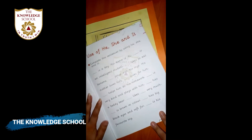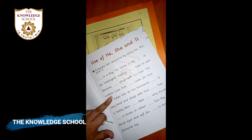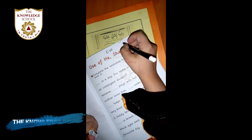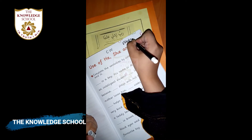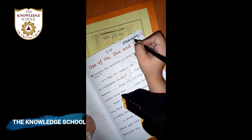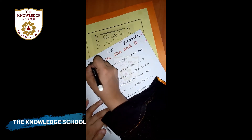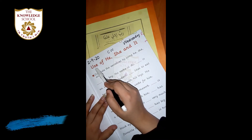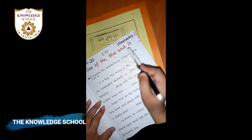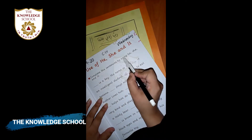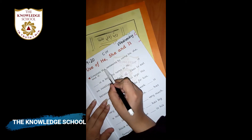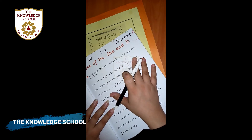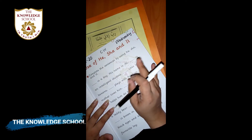Now take out page number 21. First, write the date and day — C.W. Today is Wednesday, W-E-D-N-E-S-D-A-Y, and today is 2nd September 2020. The question is: use of he, she, and it. Complete the sentences by using he, she, and it. There are different sentences on this page and you have to fill in he, she, or it.